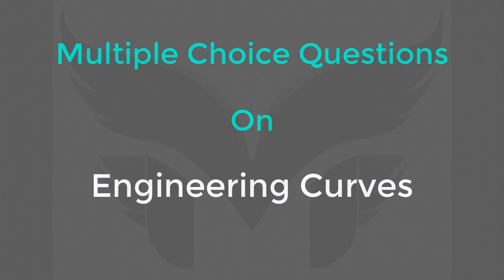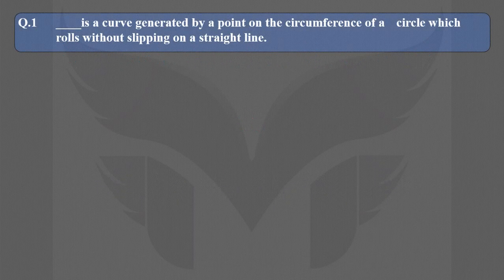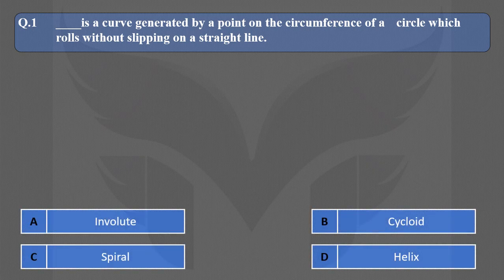Let's take the first question. Dash-dash is a curve generated by a point on the circumference of a circle which rolls without slipping on a straight line. Here we have four options: Involute, Cycloid, Spiral, and Helix. The correct option is B, Cycloid.